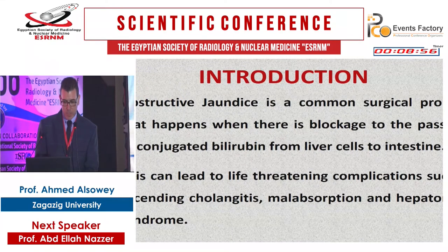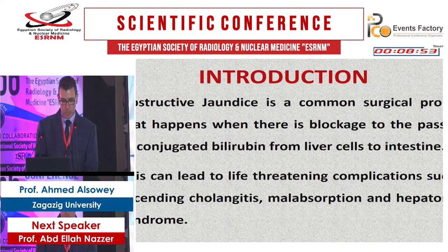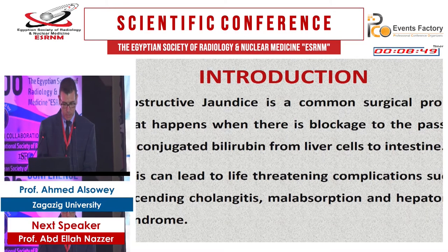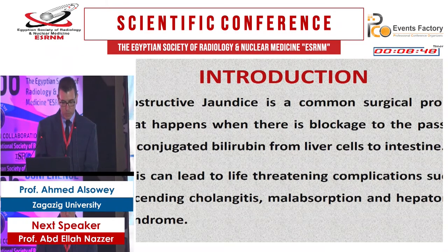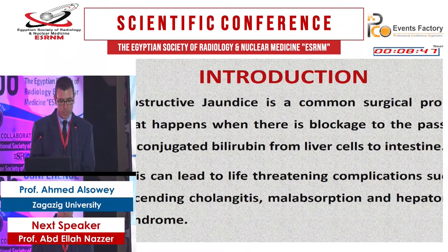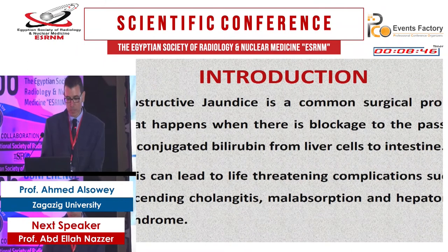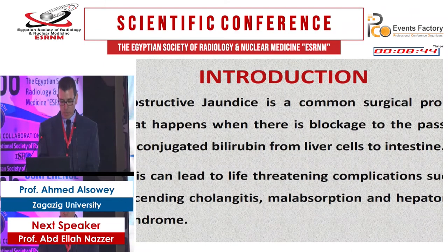Obstructive jaundice is a common surgical problem that happens when there is a blockage to the passage of conjugated bilirubin from liver cells to the intestine. This can lead to life-threatening complications such as ascending cholangitis, malabsorption, and hepatorenal syndrome.